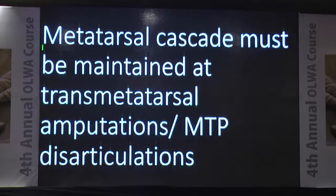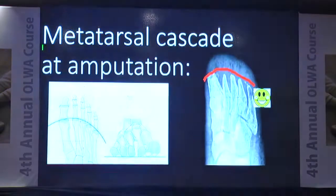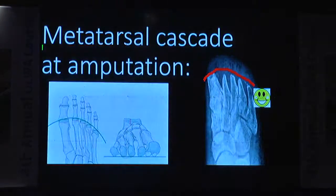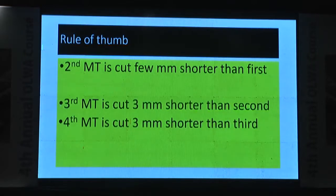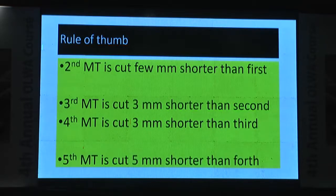Whenever doing trans-metatarsal amputation, a metatarsal cascade must be maintained. You want the parabola to be preserved. The second metatarsal is cut a few millimeters shorter than the first; the third is cut three millimeters shorter than the second; the fourth is cut three millimeters shorter than the third; and the fifth is cut five millimeters shorter than the fourth.